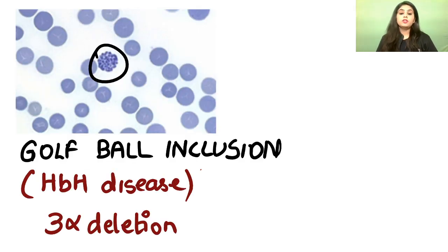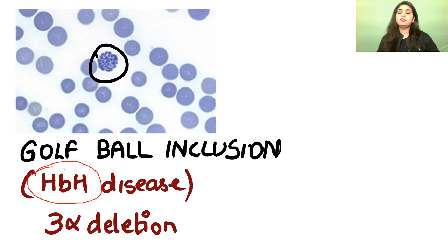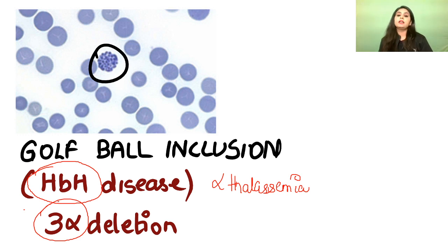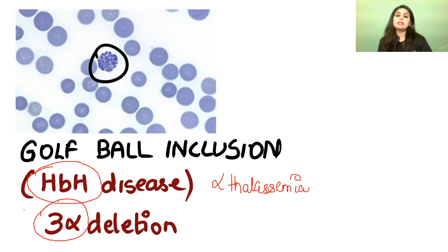Golf ball inclusions: in the RBC image you can see large dots making it look like a golf ball. This is seen in HBH disease — a type of alpha thalassemia in which three out of four alpha genes are deleted. So: alpha thalassemia, three-gene deletion, HBH disease, golf ball inclusion. This has appeared in previous NEET sessions and is important for the AIMS exam.